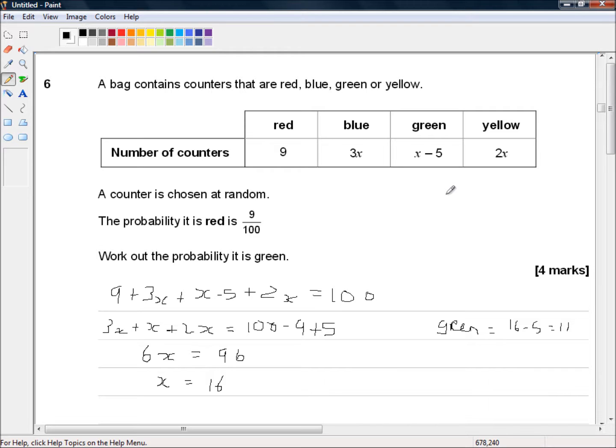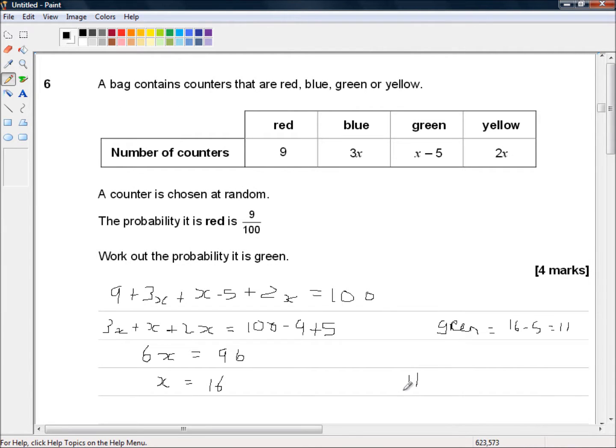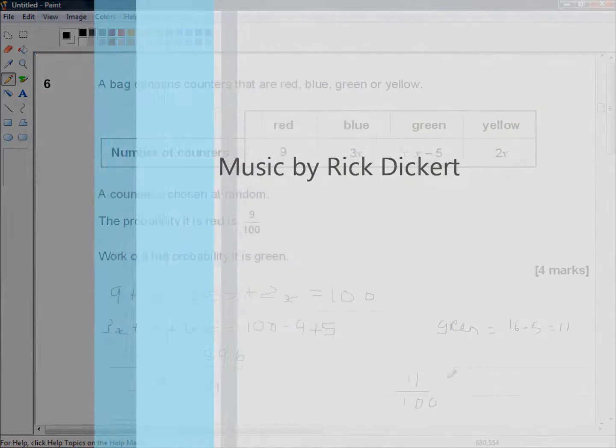So our probability that a green counter is chosen will be 11 out of 100. OK. I hope that's helpful and I'll see you in the next video. Thank you.